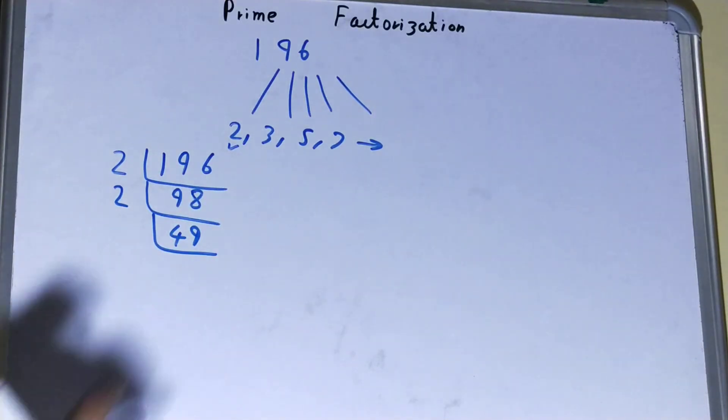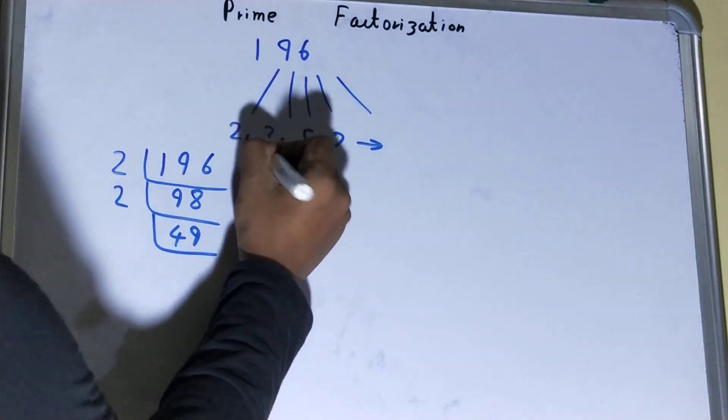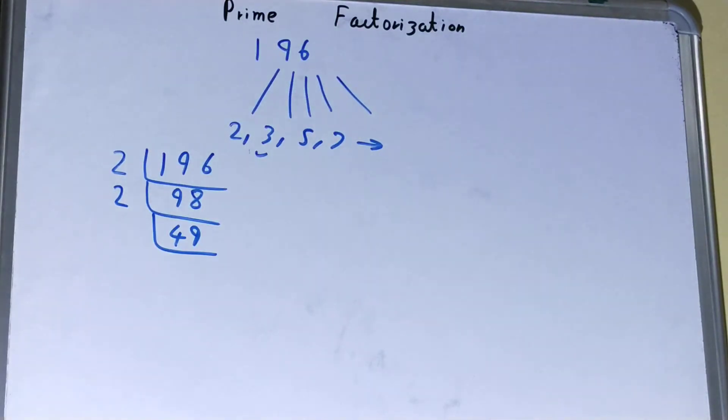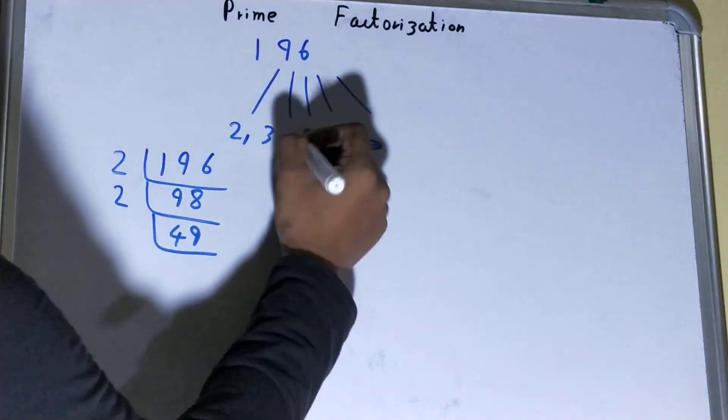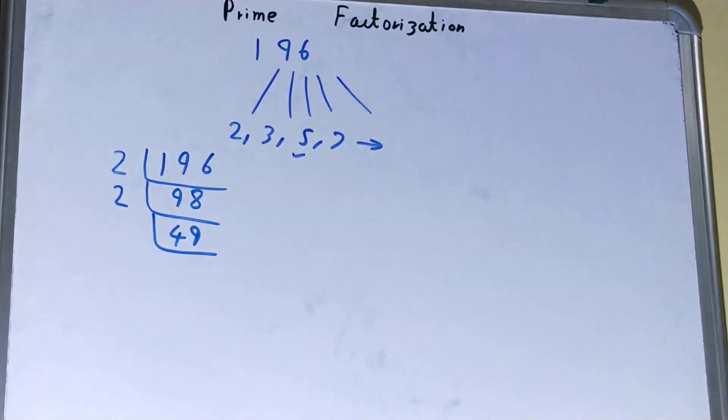Is 49 divided by 2? No, because 49 is an odd number. We'll go to 3. Is 49 divided by 3? No, we'll get a remainder of 1. It is not divisible. We'll go to 5. Is 49 divisible by 5? No.